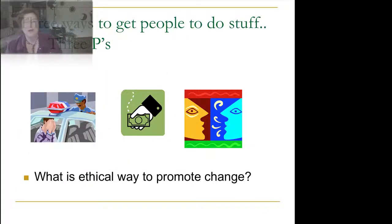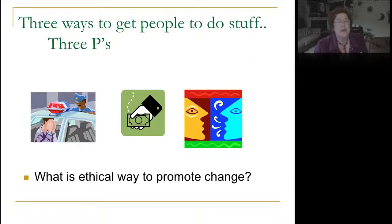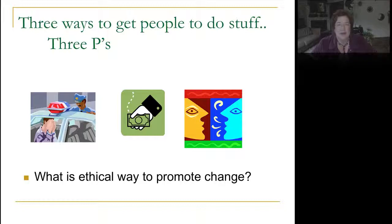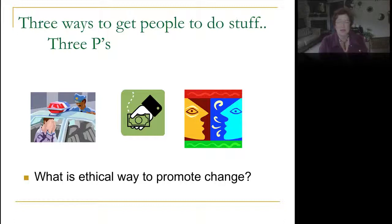How do you get people to do stuff? There are three ways — the three P's — and you can get anybody to do almost anything using one or multiple parts of them. Power: you make them do it — use police, give fines, tell them they won't make their grade. Patronage: you pay them, give them perks, benefits, trades, so they'll engage in the behavior you want. And persuasion: you talk them into it, using communication as a tool.